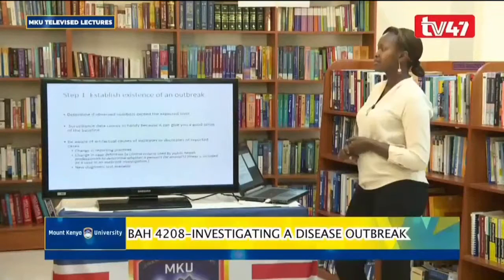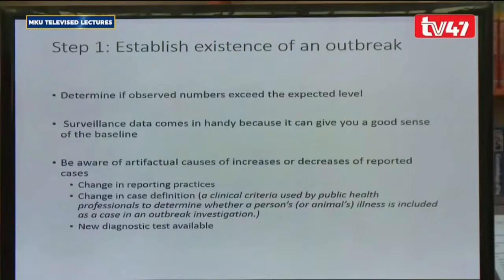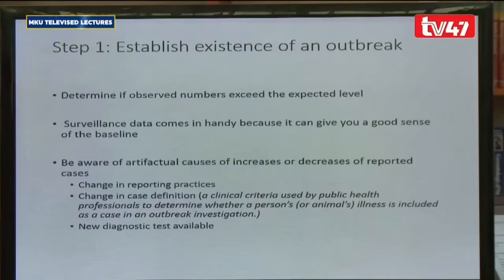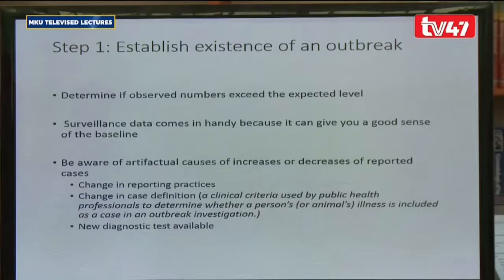Step number one is to establish the existence of an outbreak. This is done by checking the numbers. For a disease outbreak, the numbers are usually in excess of what is expected. You need to know what the expected number is. For COVID-19, we are supposed to have zero cases, so if you have one case, it will be considered an outbreak. Surveillance data is very important because it guides you on what is expected.